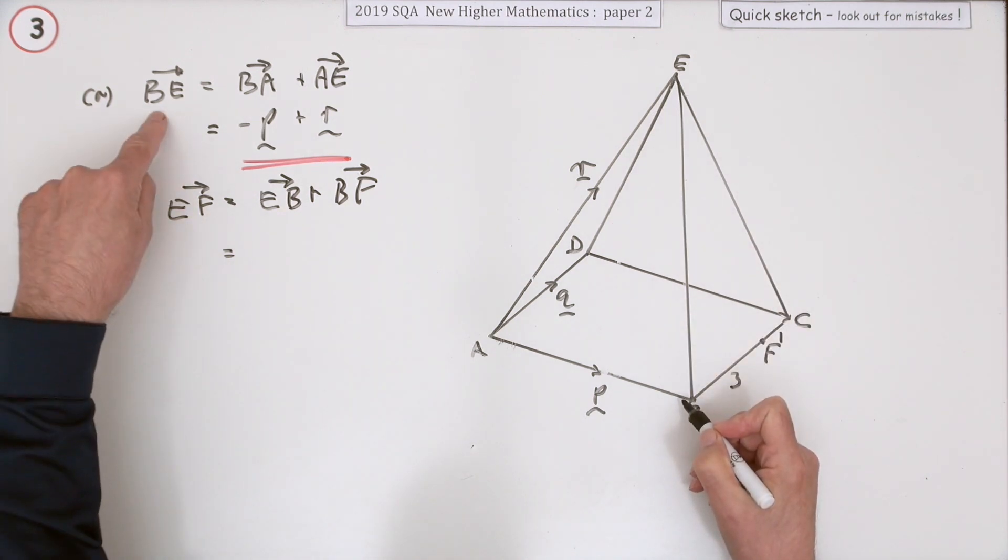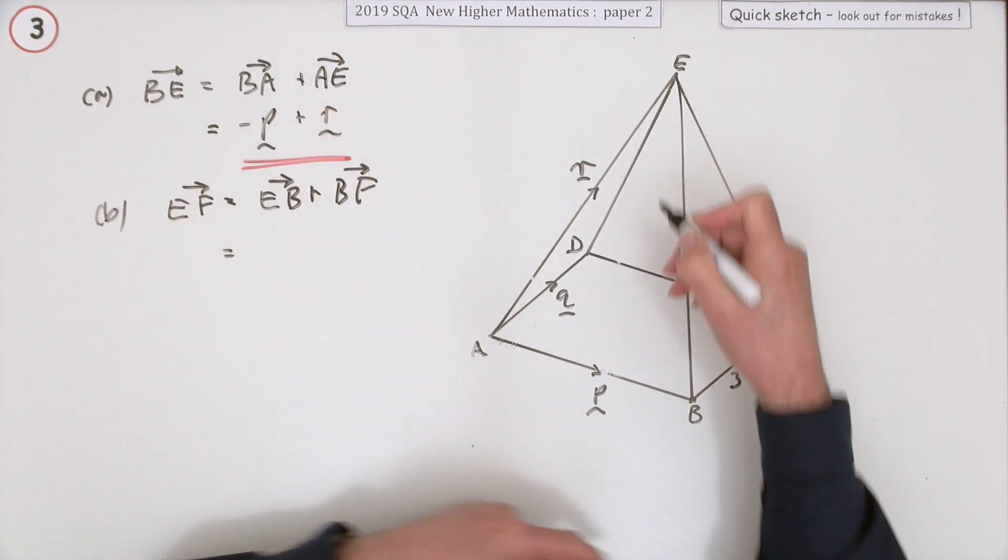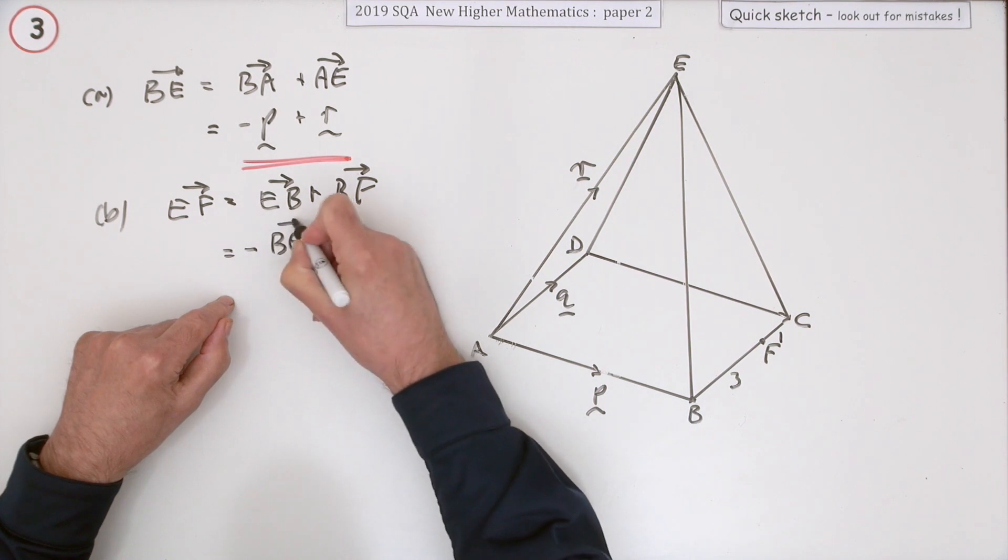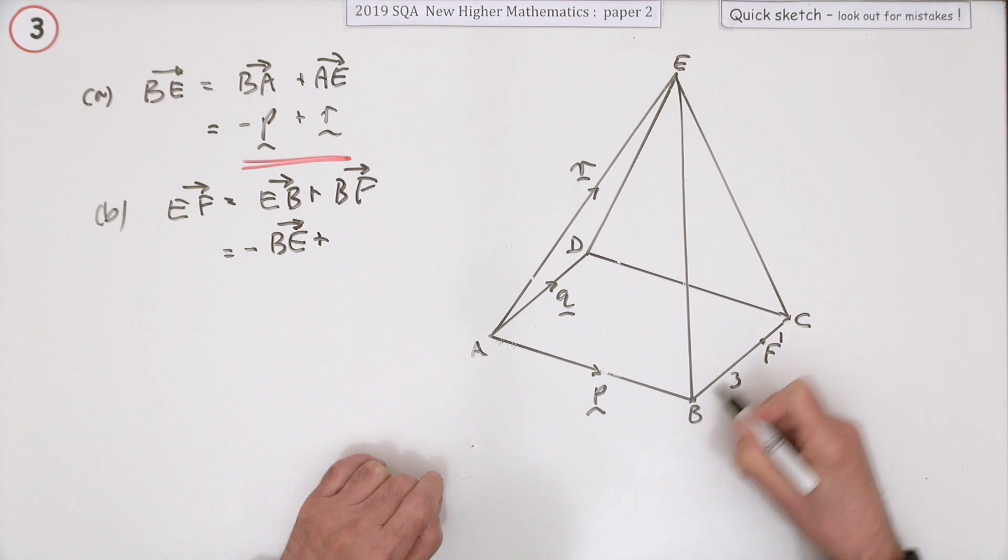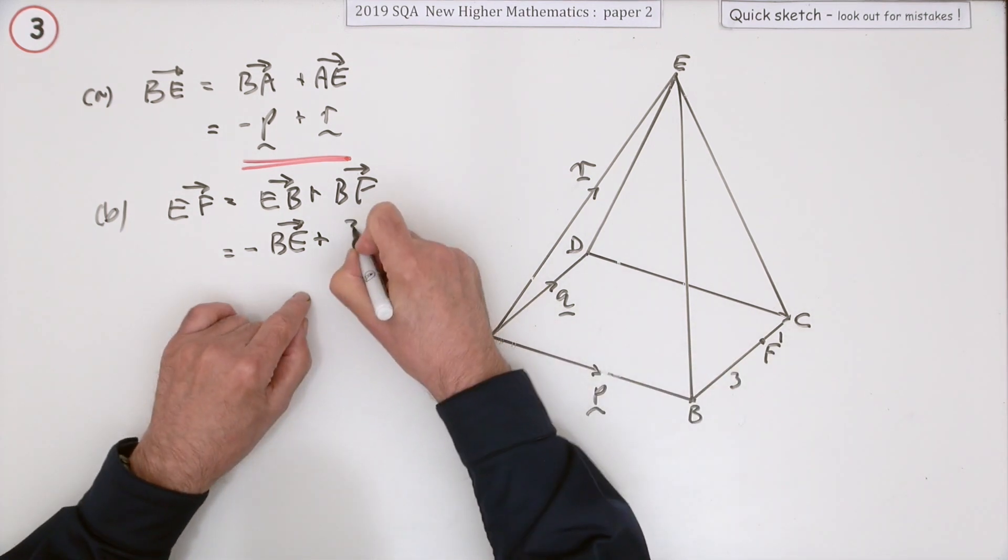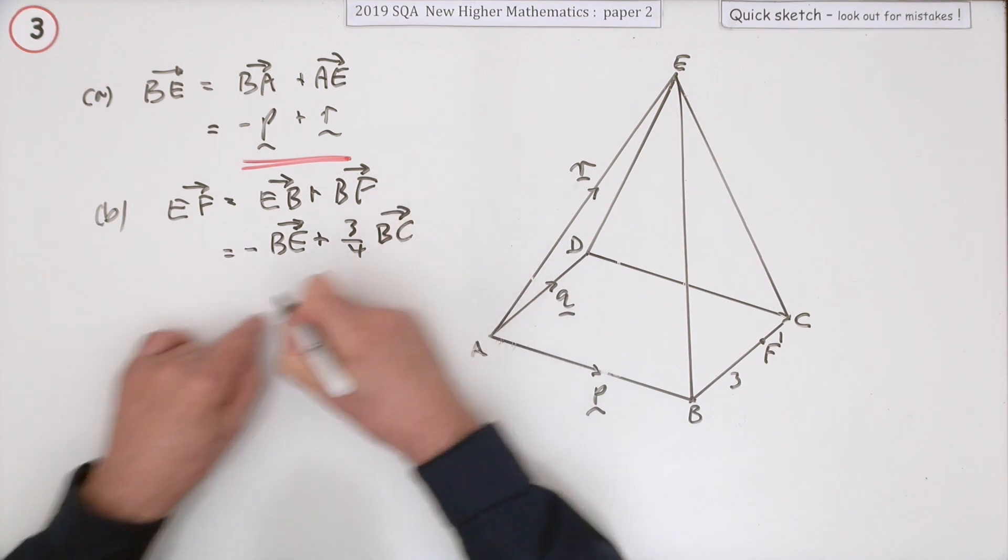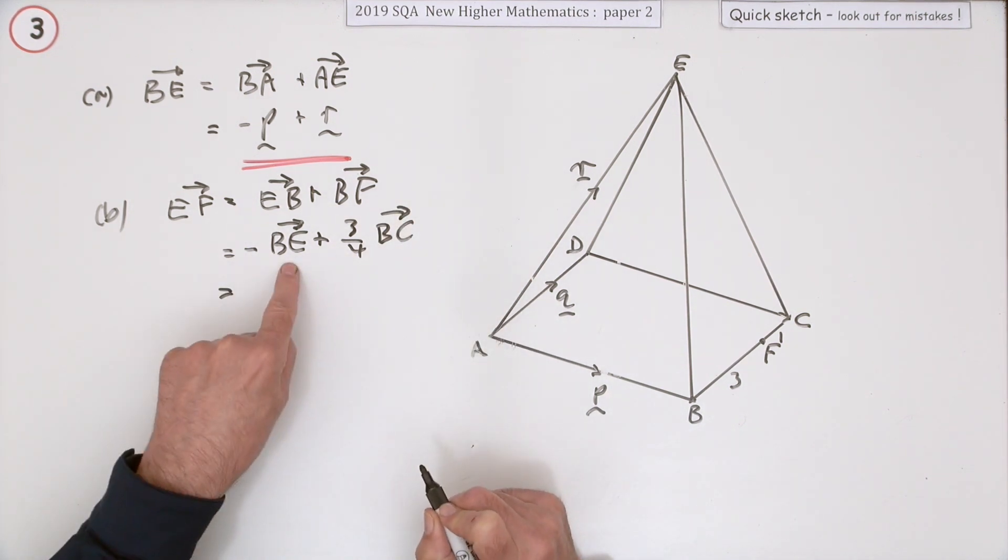Now what is E to B? Because we did that already, or rather you did it the other way around. That's the negative of BE. And what about B to F? That's part way from B to C. It's three out of the four, it's three quarters of the way from B to C.